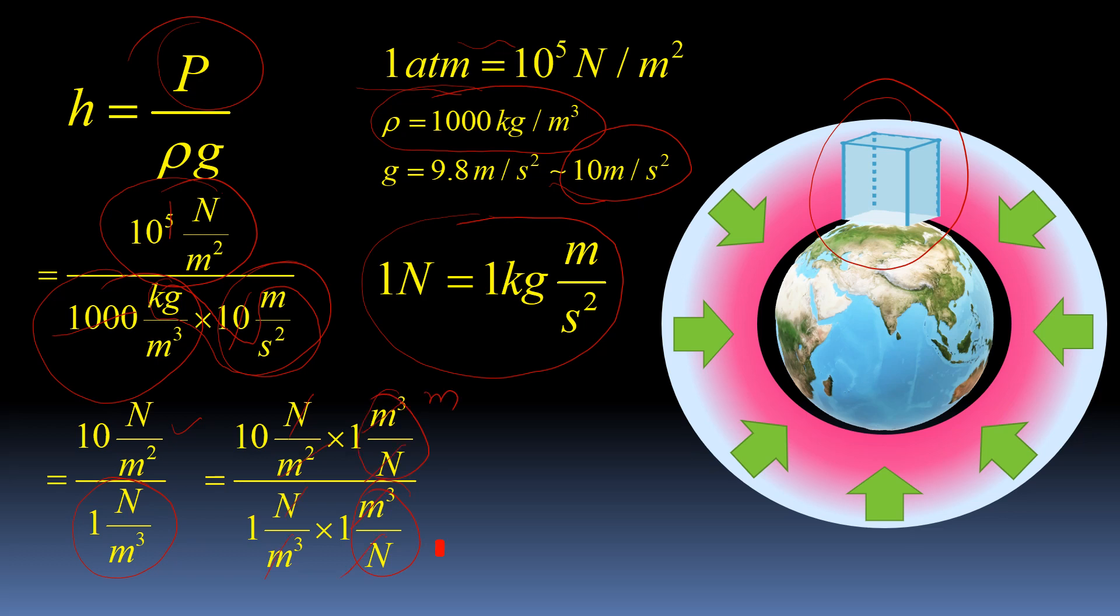The height of water column is 10 meters, which is equivalent to one atmosphere. Now start the actual visualization part. Let's see how much is 10 meters of height.